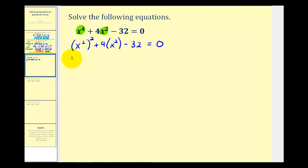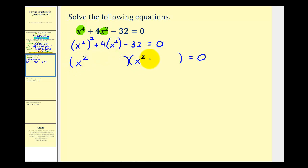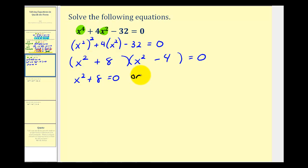This factors into two binomial factors. Instead of x and x, we'll have x squared and x squared. We want the factors of negative 32 that add to positive four, which are positive eight and negative four. This product is equal to zero when x squared plus eight equals zero or when x squared minus four equals zero.